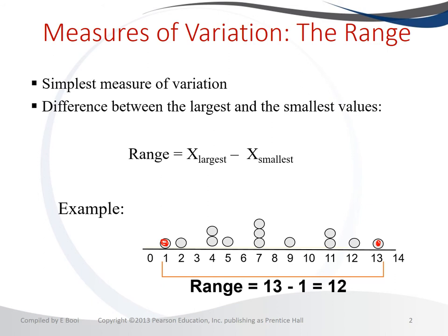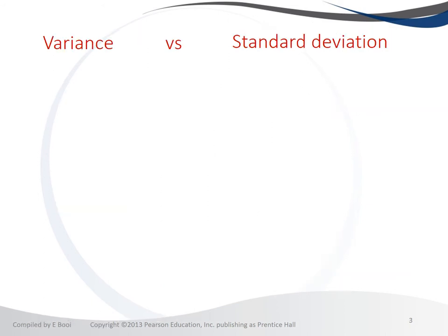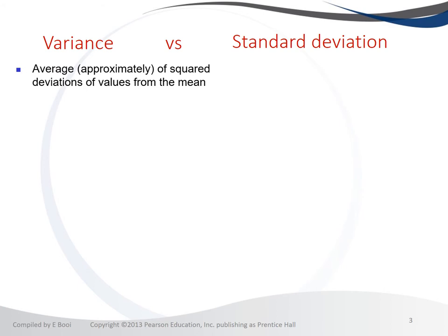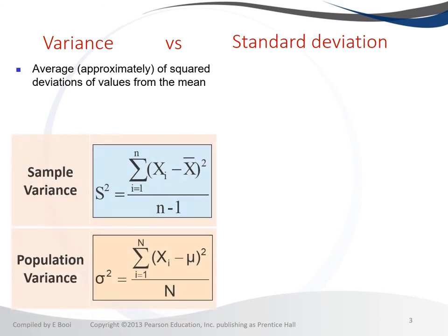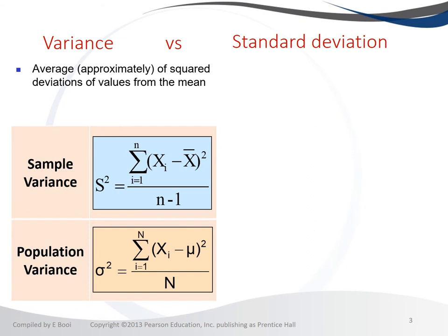The variance is the average of squared deviations of the values from the mean. We normally do not interpret the variance, but we can calculate it. For the sample variance, we use the letter s-squared, which is the sum of your observations minus the mean, squared, divided by n minus one.